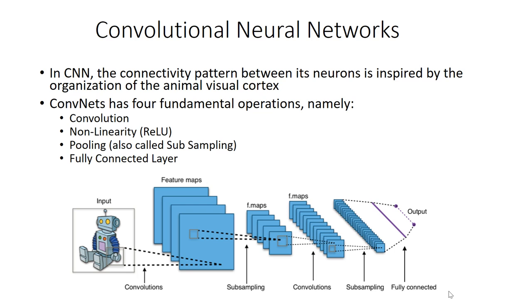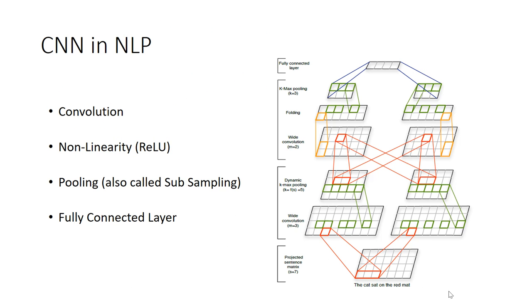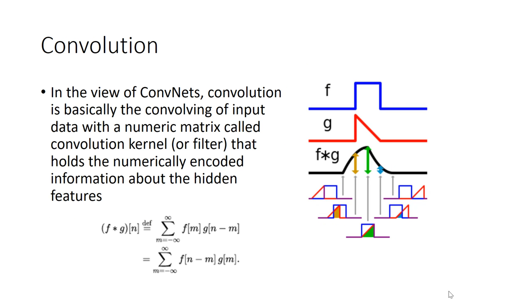In this image, convolutional neural networks are shown to be used in the field of image classification. We have to use CNN in the field of NLP. For NLP also, we have four important layers, namely convolution, non-linearity, pooling, and fully connected layers. Let's talk about the convolution layer first.